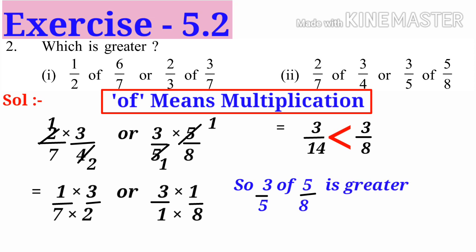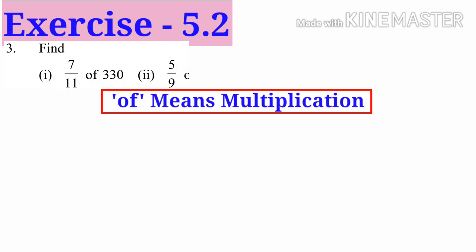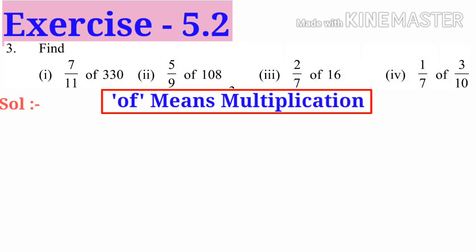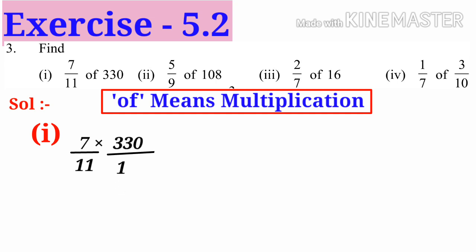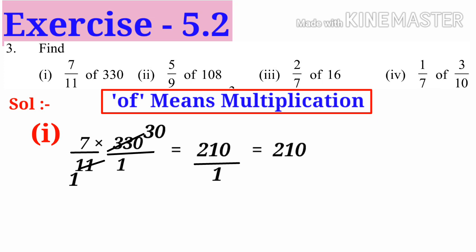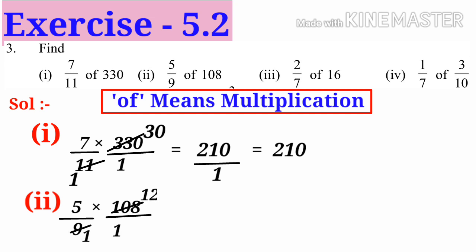Now third problem: find 1, 2, 3, 4. Solution: put '×' in place of 'half'. Problem 1: 7/11 × 330/1. By simplification, divide by 11 to get 1 and 30. Numerator: 7 × 30 = 210, denominator: 1 — wait, simplification gives 7 × 30 = 210; answer is 210. Problem 2: 5/9 × 108/1. By simplification divide by 9: get 1 and 12. Numerator: 5 × 12 = 60, answer is 60.